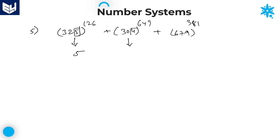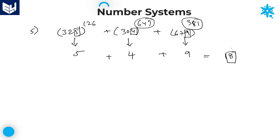Coming to the second term, the number is ending with 4 — second category digits — and the power value is odd. For odd power of 4, units place is 4. For the last term, the number is ending with 9 and the power value is odd, so the required units digit is always 9. Now add all the values: 5 plus 4 is 9, then 9 plus 9 is 18. Therefore the required units digit is 8.